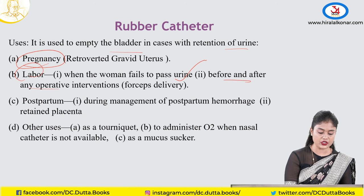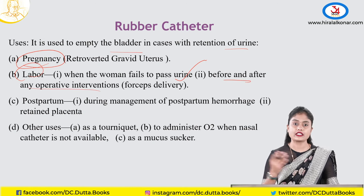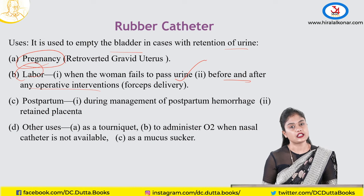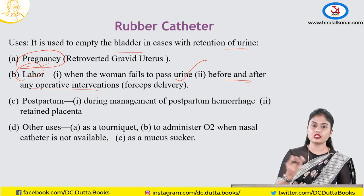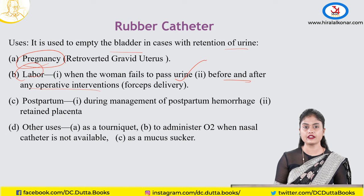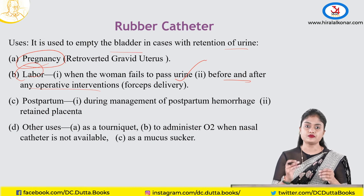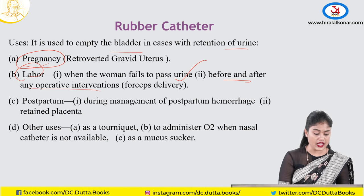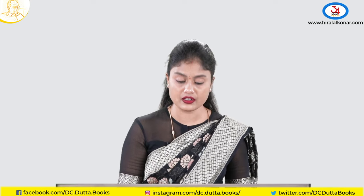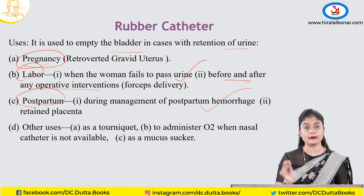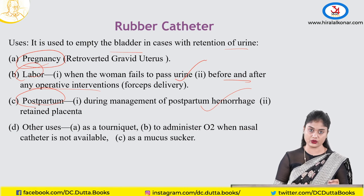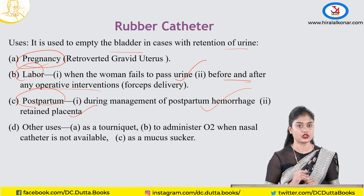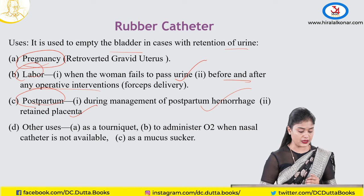Before and after operative interventions like forceps delivery, where there is severe pain in the perineum and spasm of muscles prevents urination, you can use this catheter for temporary relief. In destructive operations, we prefer long-term catheterization with a self-retaining Foley's catheter. In postpartum period, for PPH or retained placenta, when you want to drain the bladder before removing the placenta, you can also use the rubber catheter.